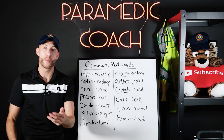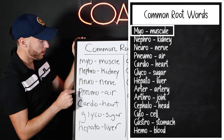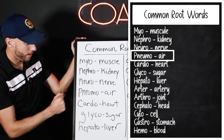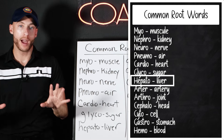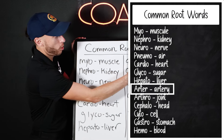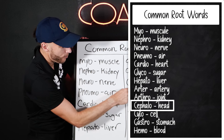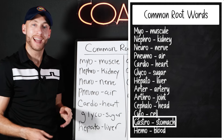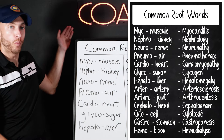I've compiled a list to give you a head start with the root words. Myo is muscle. Nephro is kidney. Neuro is nerve. Pneumo is air. Cardio is heart. Glyco is sugar. Hepato is liver. Now with these three, people get tripped up, so let's break it down: 'Arteri' is artery, 'arthro' is joint — be careful with that one. Cephalo is head. Cyto is cell, gastro is stomach, and hemo is blood. I'm going to show you on the screen right here an example with all of these.